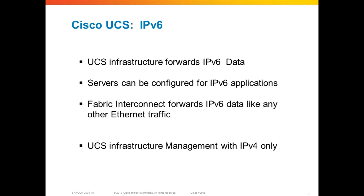Just one brief note on IPv6 in closing: the UCS infrastructure — the servers, the network, the fabric interconnect, the adapters, and the fabric extenders — all forward IPv6 data just like any other Ethernet traffic. So you can load any kind of IPv6 application on a server and it will work perfectly fine with UCS. It's the management infrastructure of UCS that is still IPv4 only, so the IP address assigned to the fabric interconnect for management and all KVM IP addresses for servers are IPv4 today. However, IPv6 is targeted in the roadmap and is coming soon.